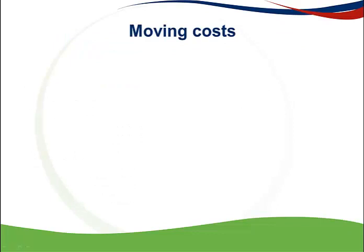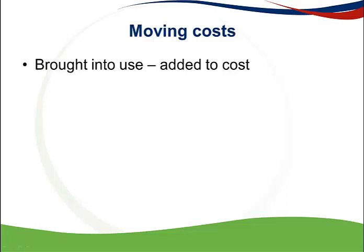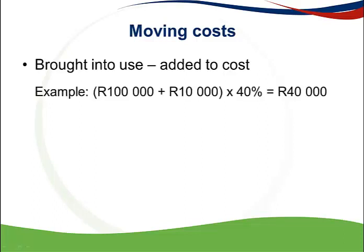Another important point is the deduction of moving costs relating to assets claimed under Section 12E and Section 12C. If the moving cost is incurred in the year that the asset is brought into use, this amount is added to the purchase price of the asset, and the total is claimed over the number of years that Section 12E or Section 12C prescribes. For example, if an asset costs 100,000 and moving costs of 10,000 are incurred to bring it into use on the same date, the moving costs are added to the asset cost and then the 40% is applied to the full 110,000.